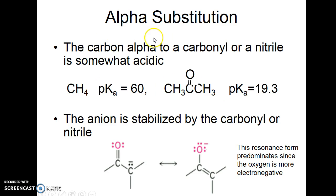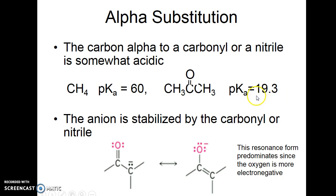Alpha substitution can occur through this acidic carbon. Methane has a very high pKa because it is not acidic at all. Acetone has a pKa of 19.3, so it's much more acidic due to stabilization of the negative charge on the carbon adjacent to that carbonyl. Resonance occurs that stabilizes that negative charge.